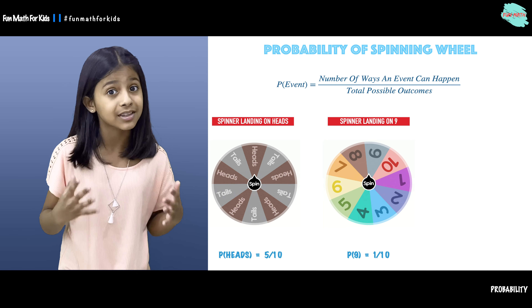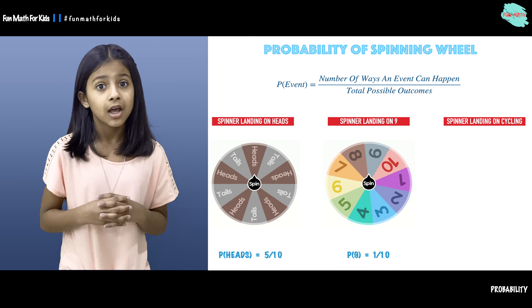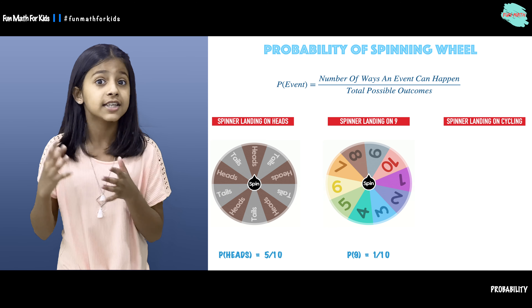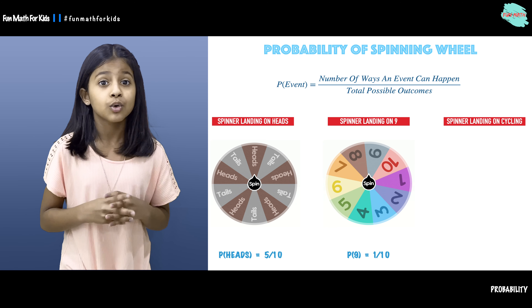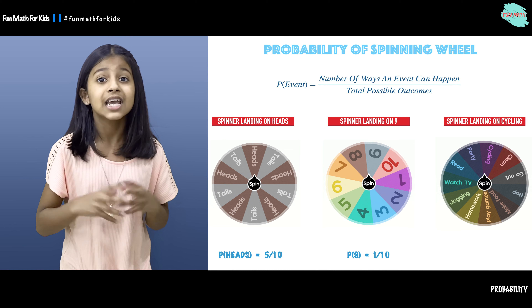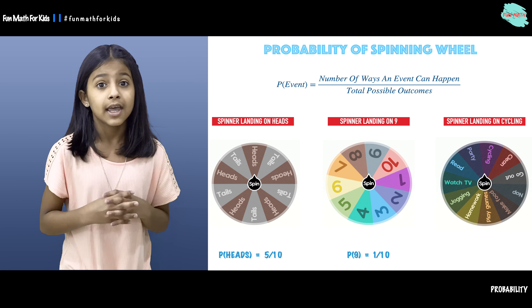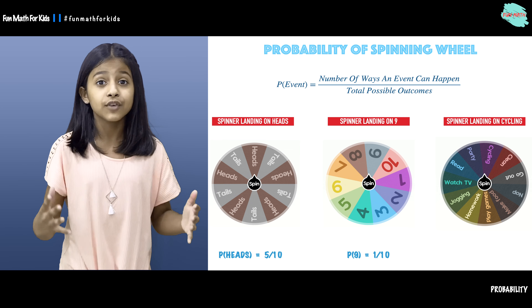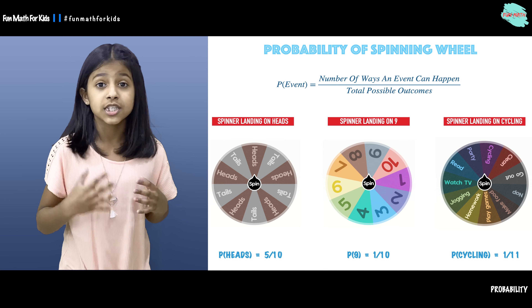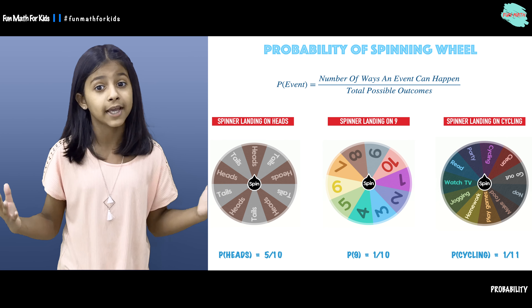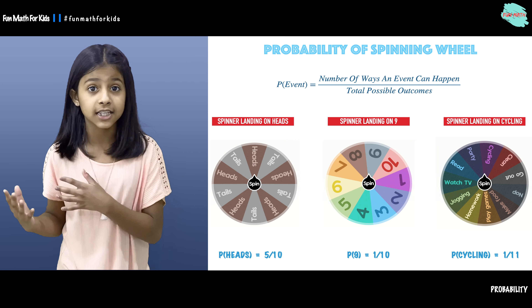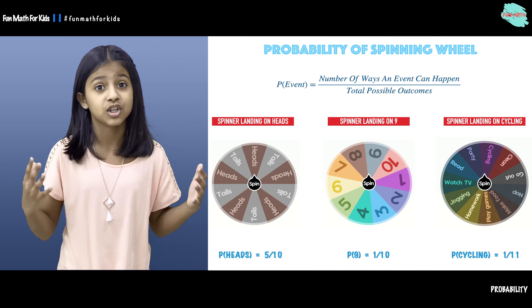Let's talk about the last example. What is the probability of the spinner landing on cycling? We have a spinner with 11 activities on it — including watching TV, reading, going to a party, and going cycling. The probability of the spinner landing on cycling is 1 over 11, because there is one way the spinner can land on cycling and 11 total possible outcomes.